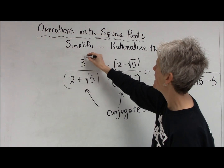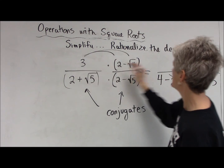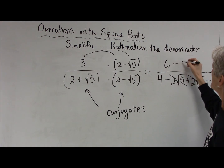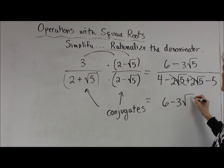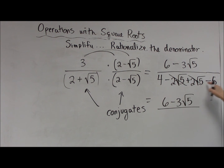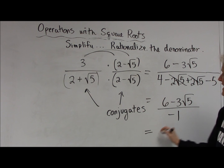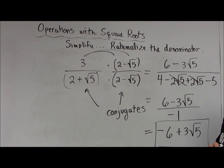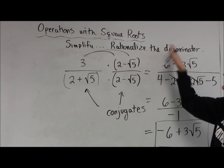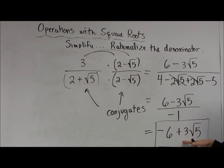So distributing that 3: 3 times 2 is 6, and 3 times the square root of 5 is negative 3 times the square root of 5. I have a radical in the numerator — that's fine. 4 minus 5 gives me negative 1. And I could divide each term by negative 1 to make this even nicer. So in rationalizing the denominator here, I ended up with something much nicer and easier to work with — that's the whole idea.